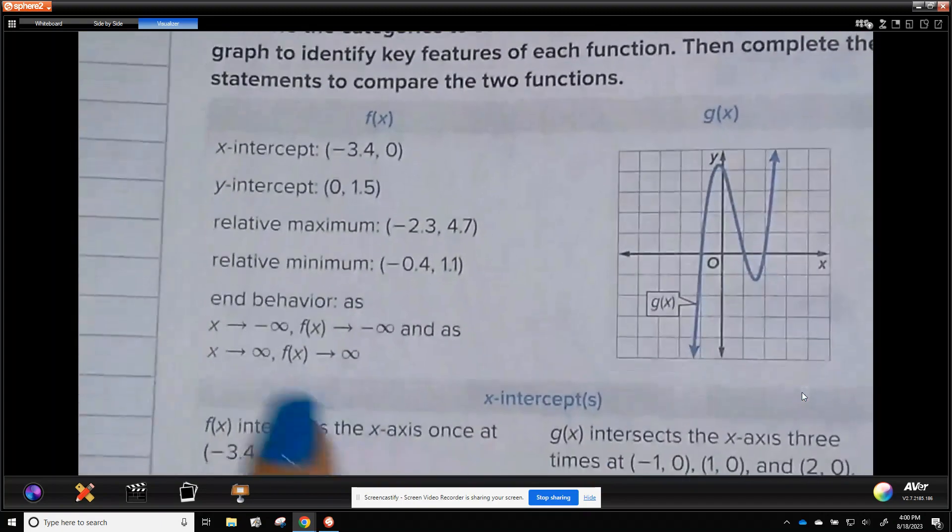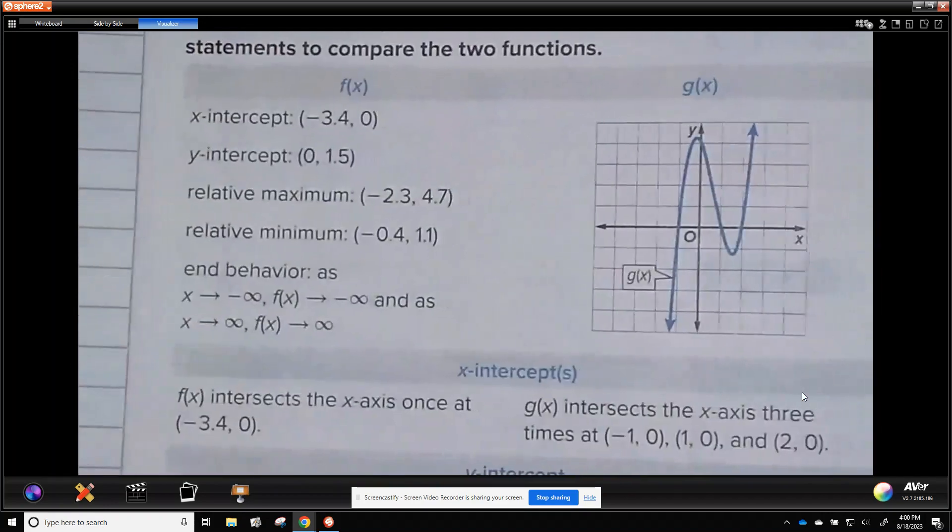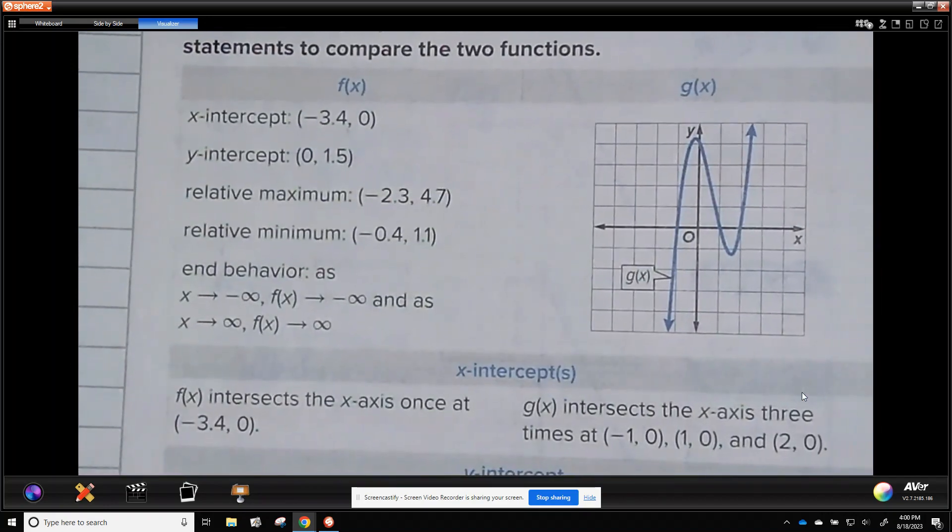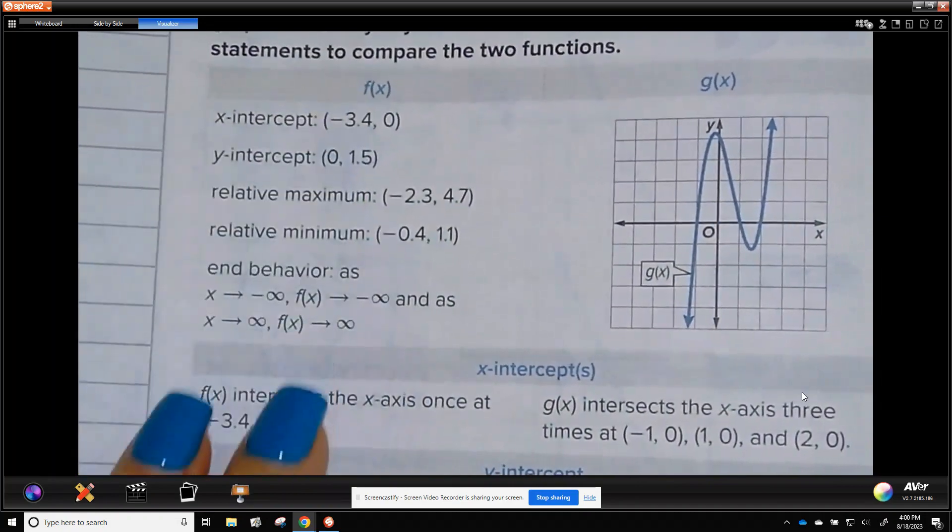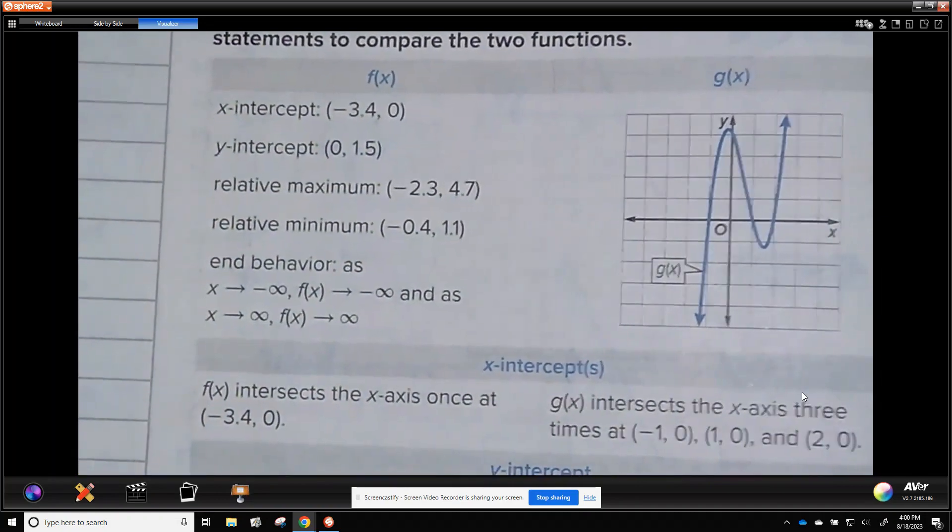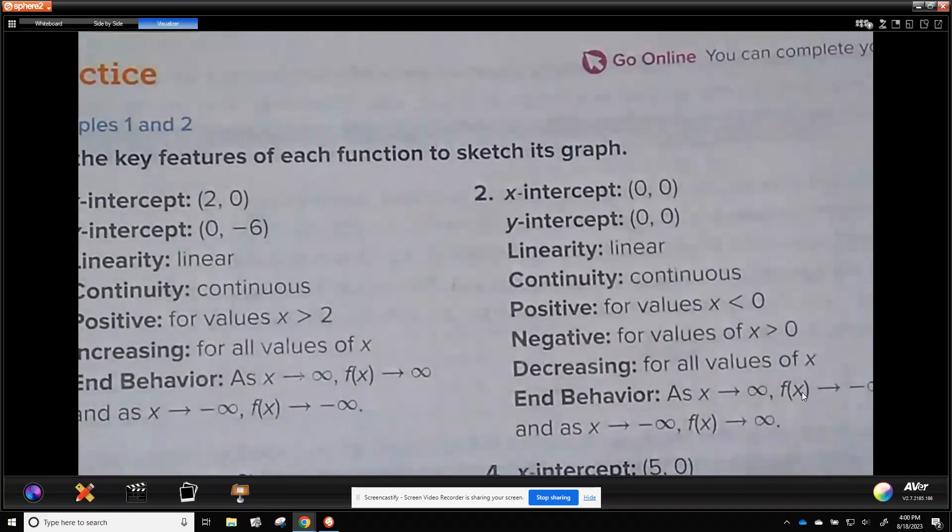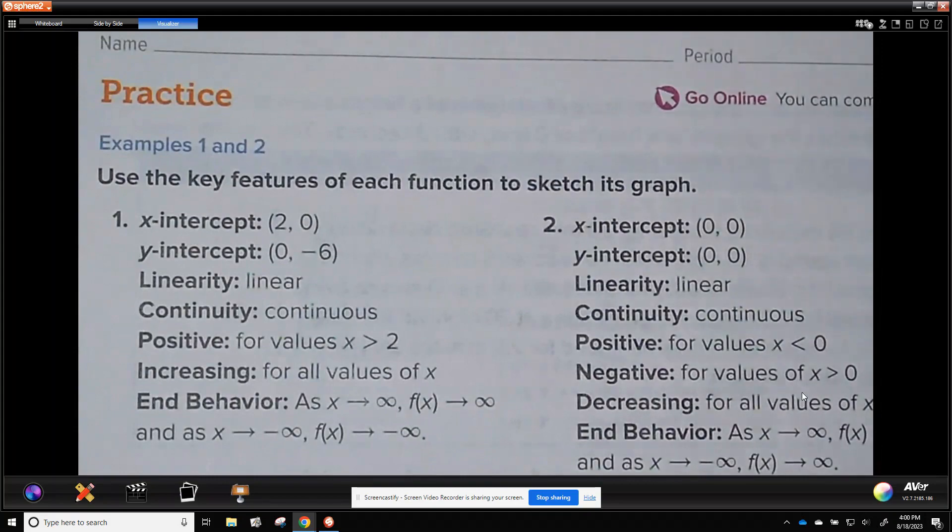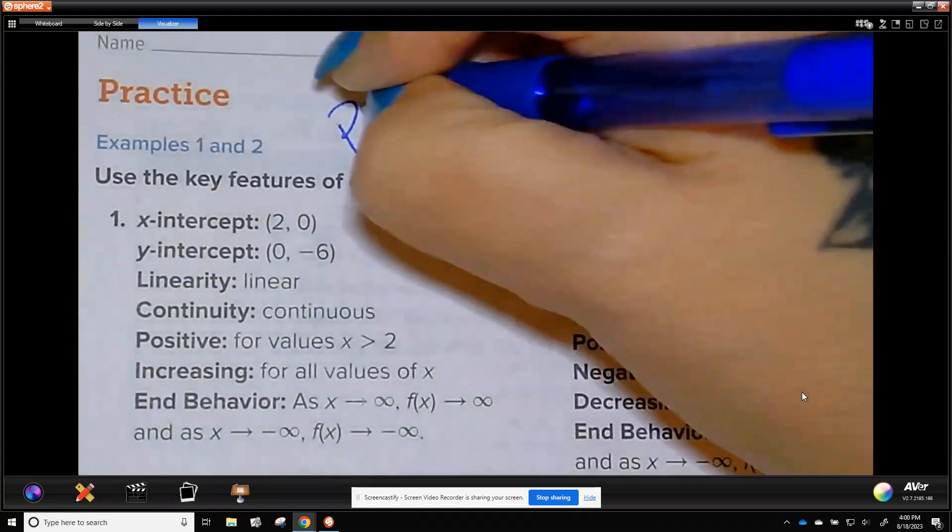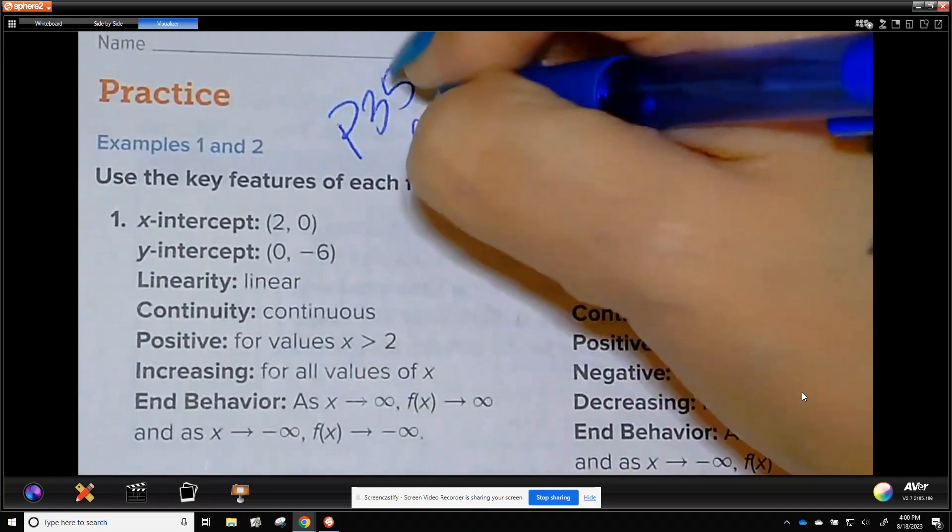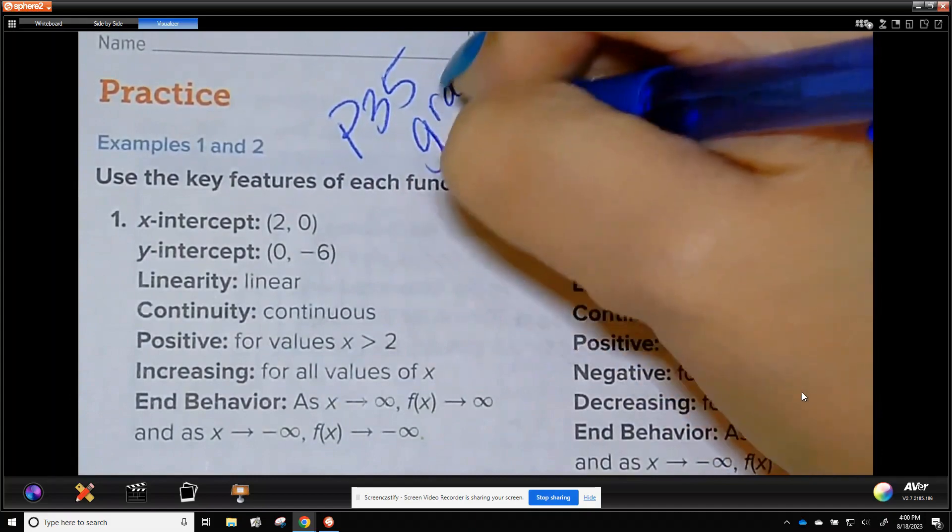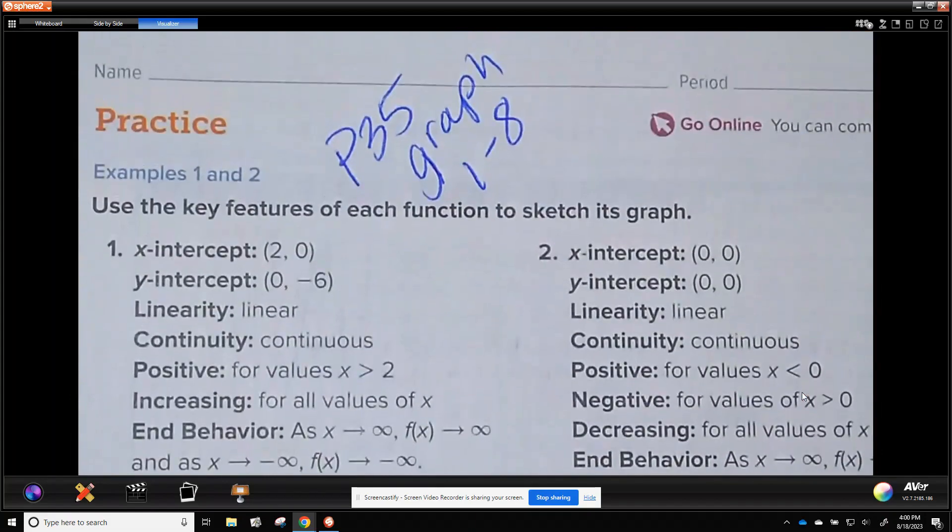All right. If you want to do more examples, see more examples, these are comparing graphs. You could try to sketch f of x. Here is g of x with some descriptors, but I'm not going over example 5. So your assignment for lesson 4 is page 35 and it's graph 1 through 8. Use graph paper or use your notebook that has graph paper in it. Thank you. Let me know if you have questions.